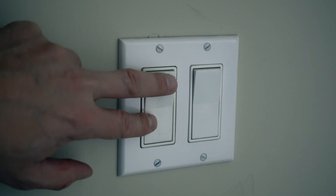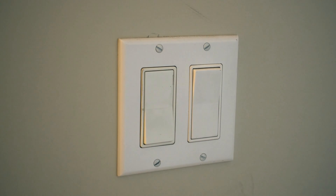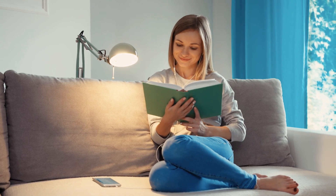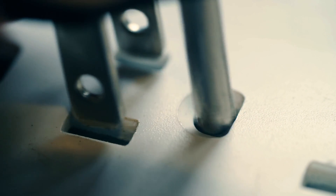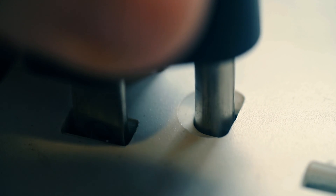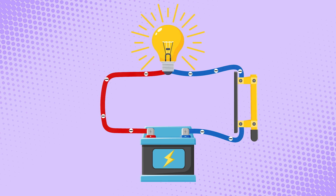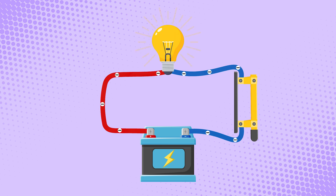In our homes, switches allow us to turn on lamps and other electrical appliances. When you look at an everyday appliance like a lamp, you'll notice it has a paired wire with prongs that allows electrons to flow in one complete circuit. When we turn a switch off, we're disconnecting that circuit — which is why the lights cut off. Turning the switch on completes that circle.